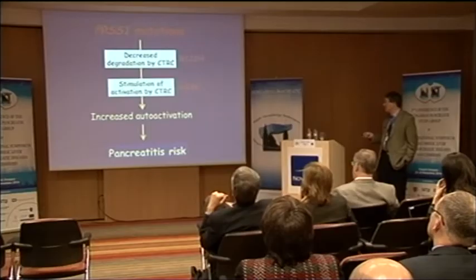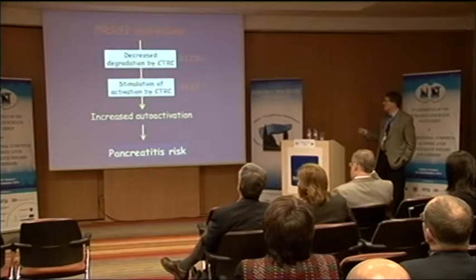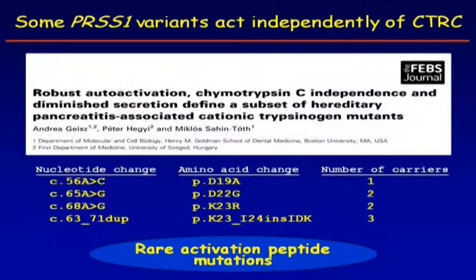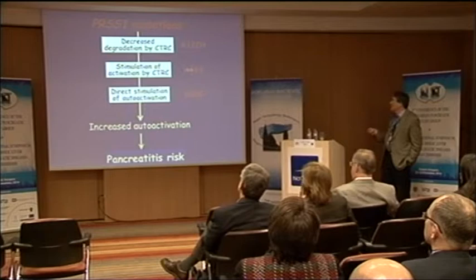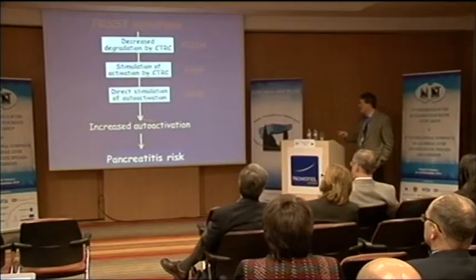Now we have two different mechanisms: many mutations stop degradation by CTRC and increase activation; some mutations actually stimulate the CTRC-dependent activation mechanism — often forgotten as a separate mechanism. More recently we found that some rare activation peptide mutations can directly stimulate activation without any help from CTRC. So most mutations block degradation, some stimulate activation, and some have direct stimulation. What's fascinating is that the biochemical phenotype is identical — you get increased activation — but you do have mutation-specific mechanisms, somewhat analogous to CFTR.